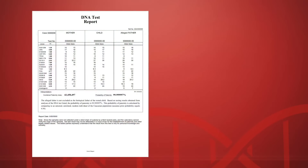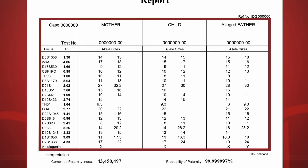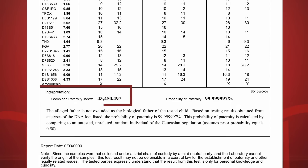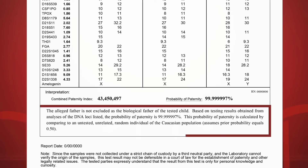The DDC Paternity Test Report has four sections: Genetic System Table, Combined Paternity Index, Probability of Paternity, and Test Conclusion.